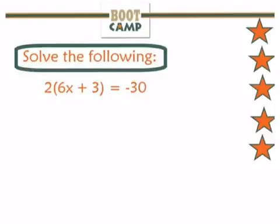In this problem, the first thing I'm going to have to do is distribute my 2 to both terms inside the parentheses. So 2 times 6x gives me 12x, and then 2 times a positive 3 gives me a positive 6. So I have 12x plus 6 equals negative 30.